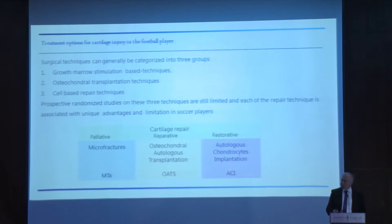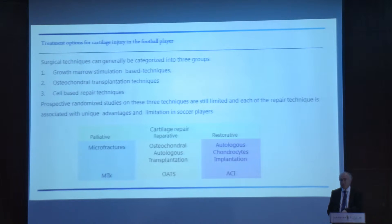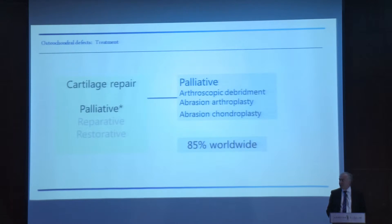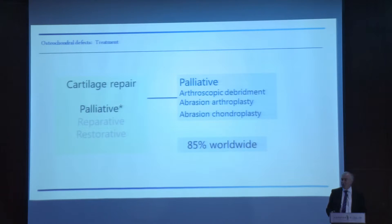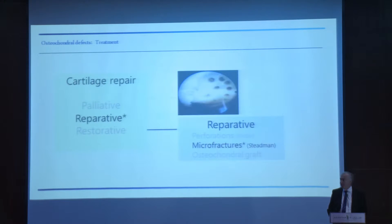We have globally three different techniques. There is the palliative technique, the reparative technique, and the restorative technique — and when we try to restore the cartilage, this is also in order to prevent the onset of osteoarthritis. The palliative technique — arthroscopic debridement, abrasion arthroplasty, abrasion chondroplasty — represents in fact 85% of procedures around the world. Even if we discuss more sophisticated techniques, most surgeons are still doing this kind of gesture globally.